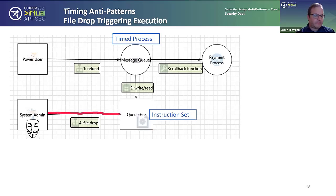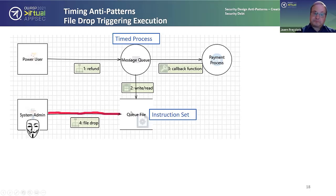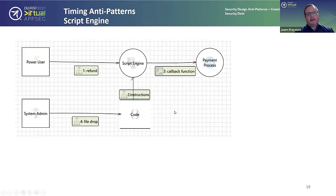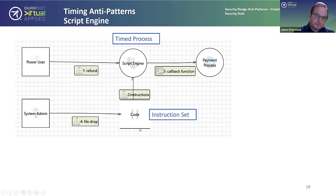When the system grows, there's a threshold where, with many internal admins, the probability of one of those roles flipping gets higher and higher — or someone uses social engineering to flip one of those roles, or a compromised system runs in that role. The anti-pattern here is the failure to protect instructions going into a time process. That's relevant for internal attack scenarios and internal malicious actors. I'll show some more variations of how this would pan out.